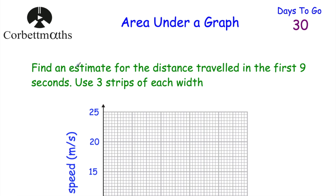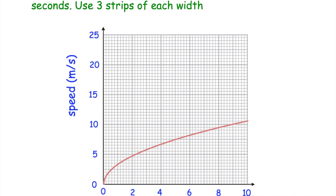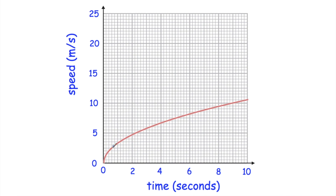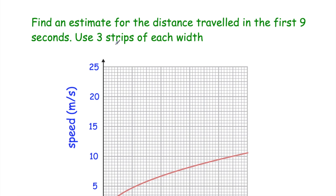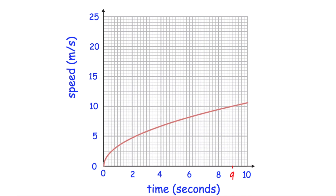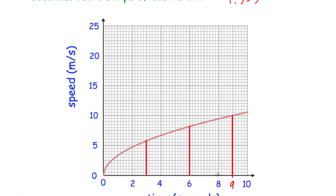Now here's a question for you to try. Find an estimate for the distance travelled in the first 9 seconds using three strips of equal width on this speed-time graph. Feel free to pause now and work it out — you can print it off or just think through how you'd find the area under the curve. Taking 9 seconds divided by 3 gives 3, so each strip is 3 seconds wide. Drawing lines at 3, 6, and 9 seconds gives three equal strips.